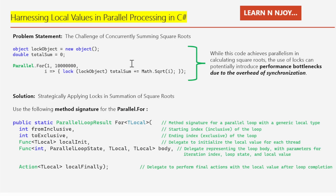While this code achieves parallelism in calculating square roots, the use of locks can potentially introduce performance bottlenecks due to the overhead of synchronization. The solution is simple: strategically apply locks only during the final summation of square roots.